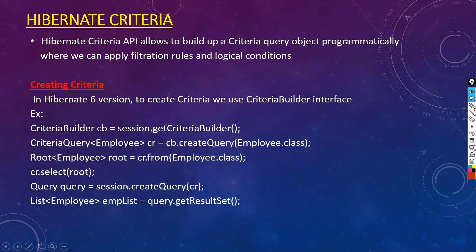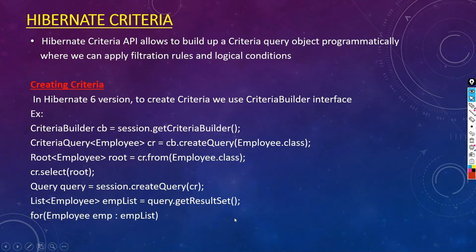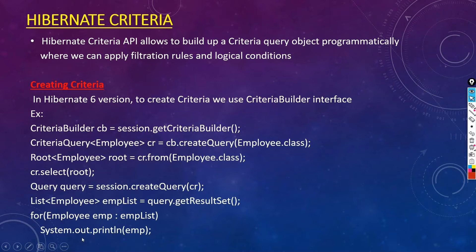The result is now present in employeeList. Traverse the employee list using an enhanced for loop: for(Employee emp : employeeList), then print the object: System.out.println(emp). This is going to display all the records of your employee info table on the console.